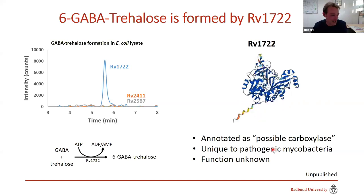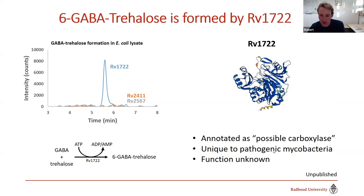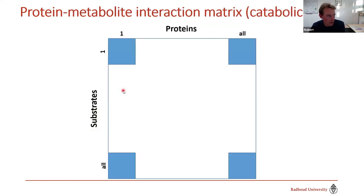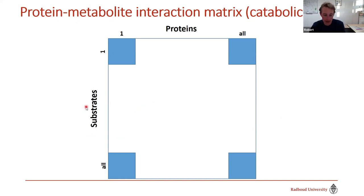The function is still unknown — a sad ending, but we're still working on it. It shows this is risky but fundamentally important research. Those were the vignettes going from protein to metabolite and metabolite to protein. These approaches are powerful but tedious, limited to one metabolite or protein at a time. We're now thinking about approaches to link all proteins to metabolites, or all metabolites to genes, at an omic scale.